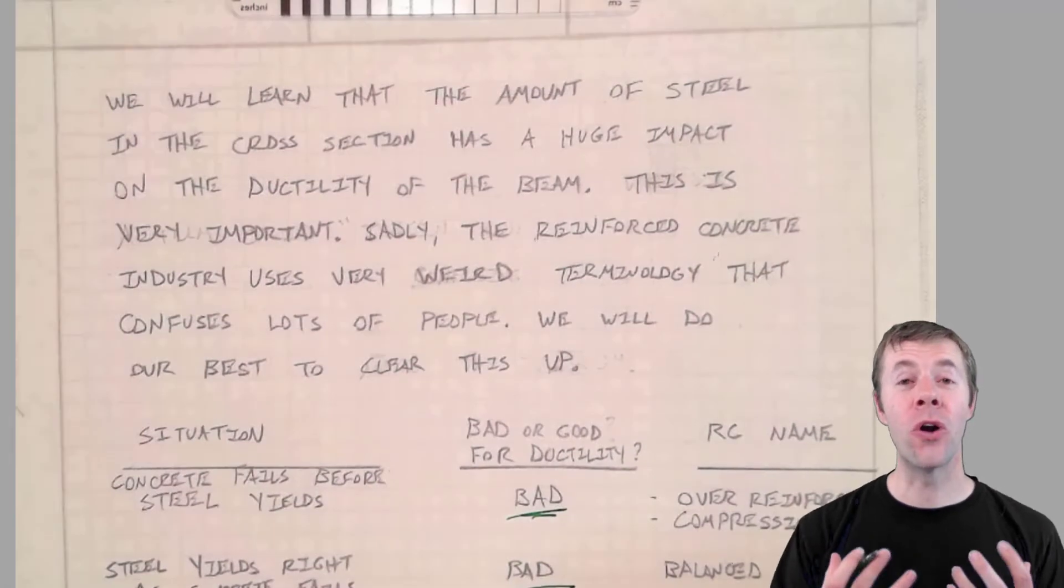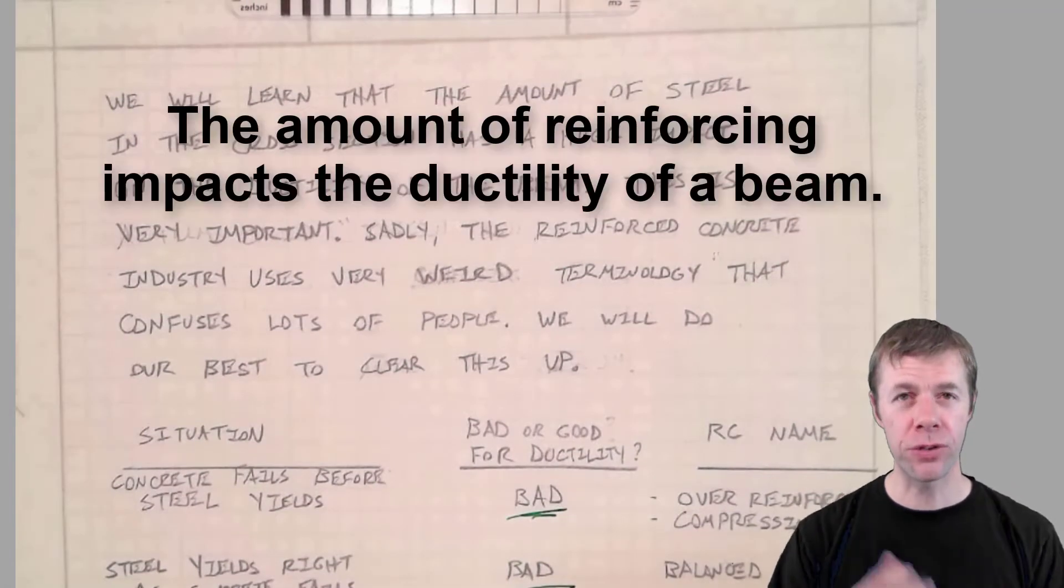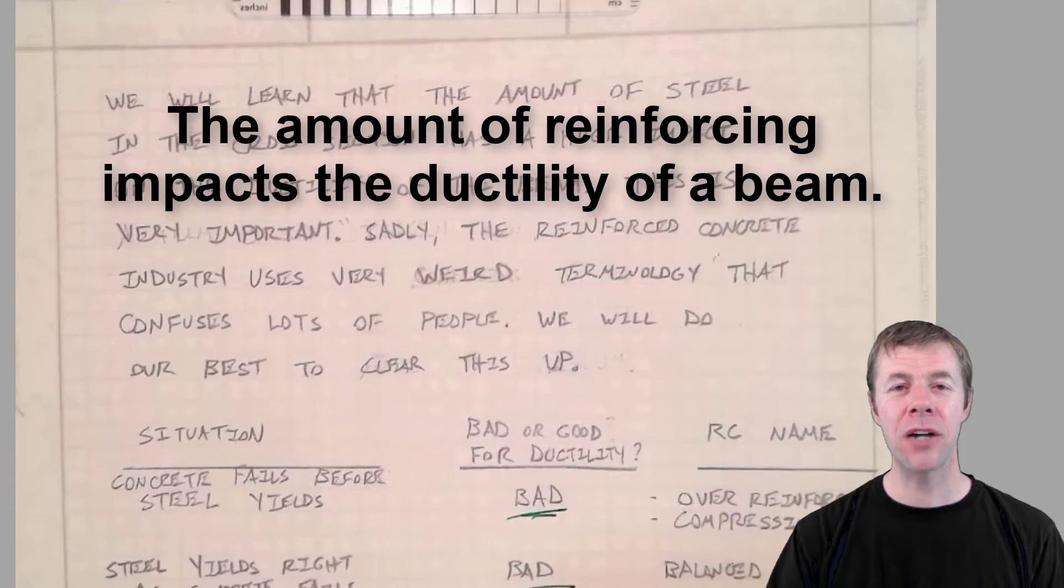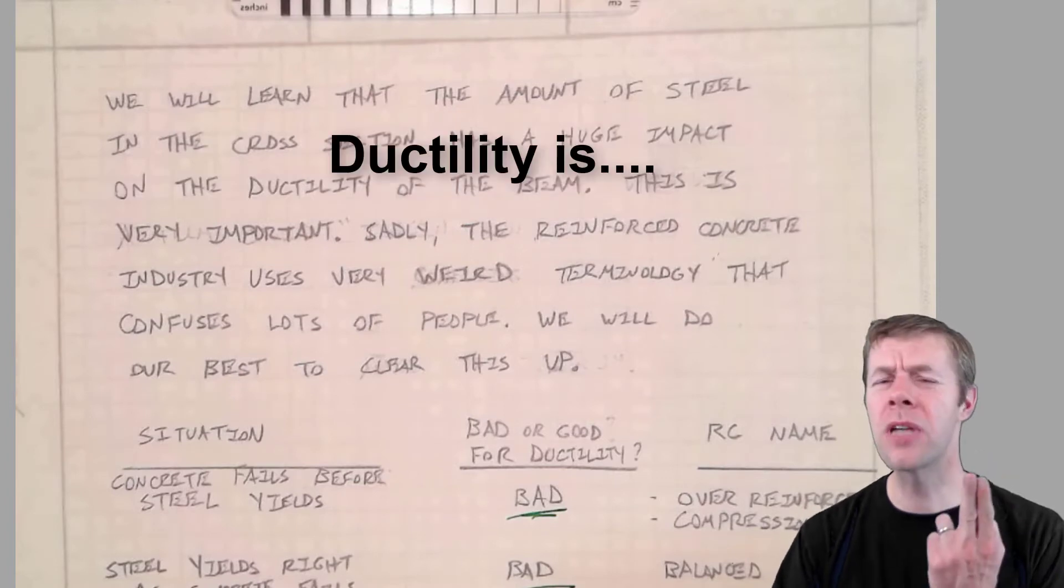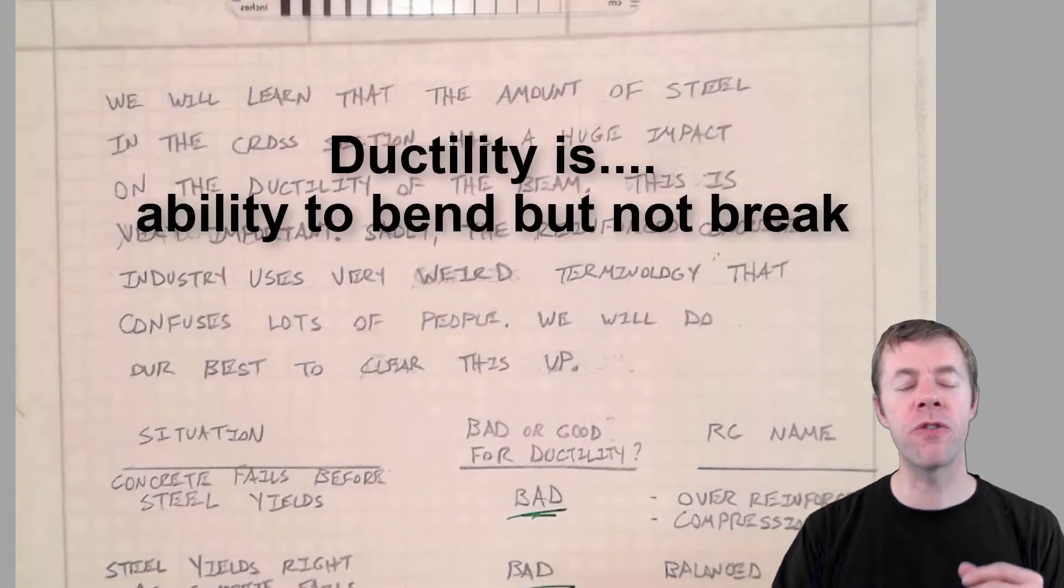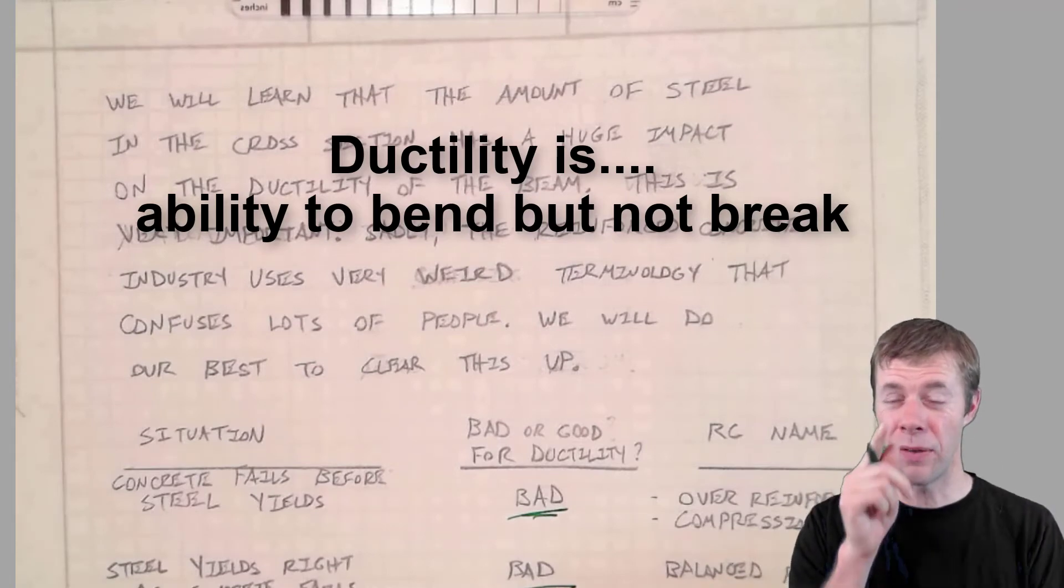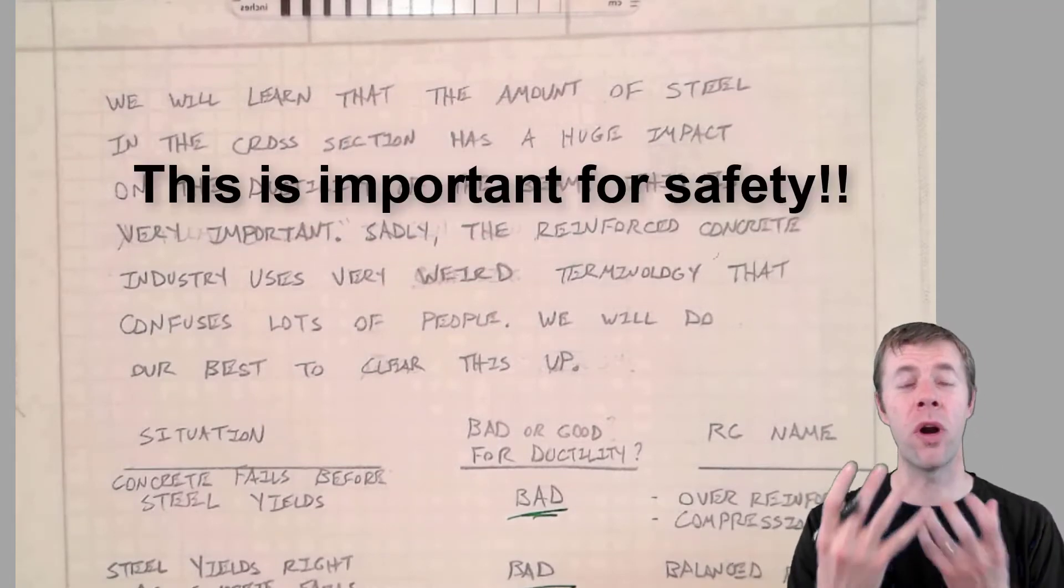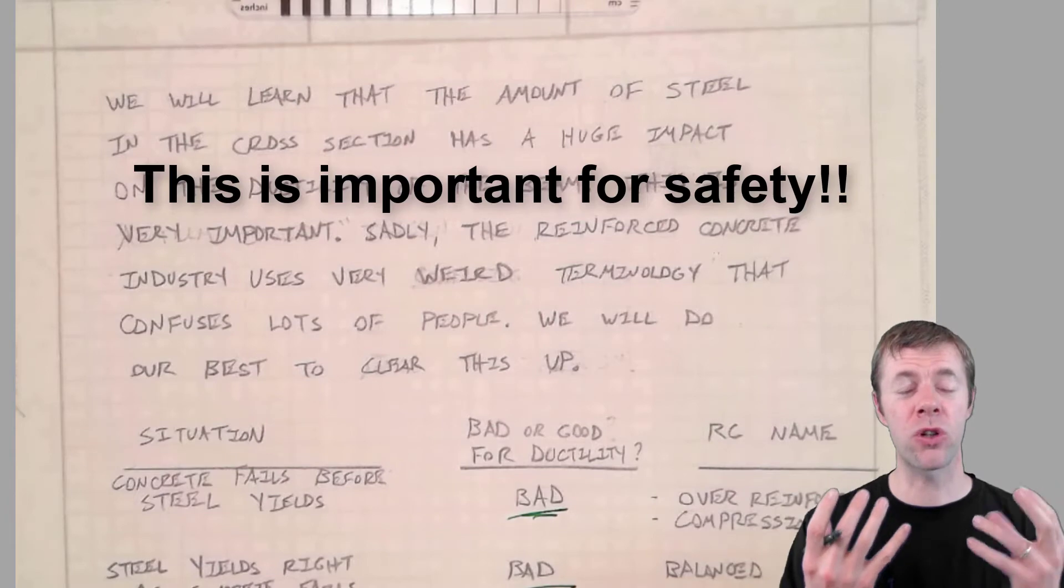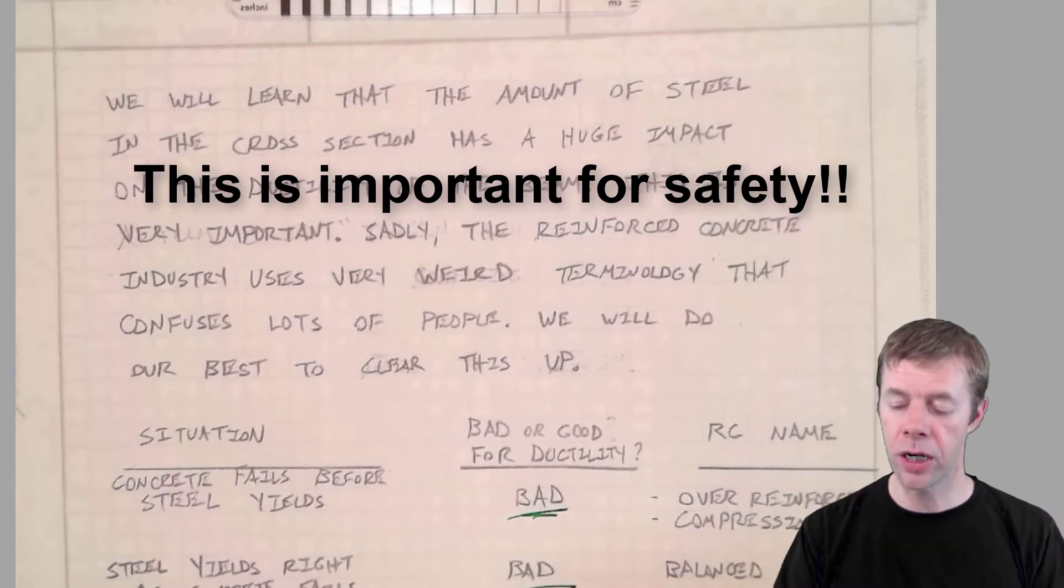In this video we're going to learn that the amount of reinforcing you have in your cross-section actually has a huge impact on the ductility of your beam. Ductility. What was that again? That's the ability for your beam to bend but not break and that's very important. That's very important for safety and also for helping people get out of your structure and providing warning that bad things are going to happen.